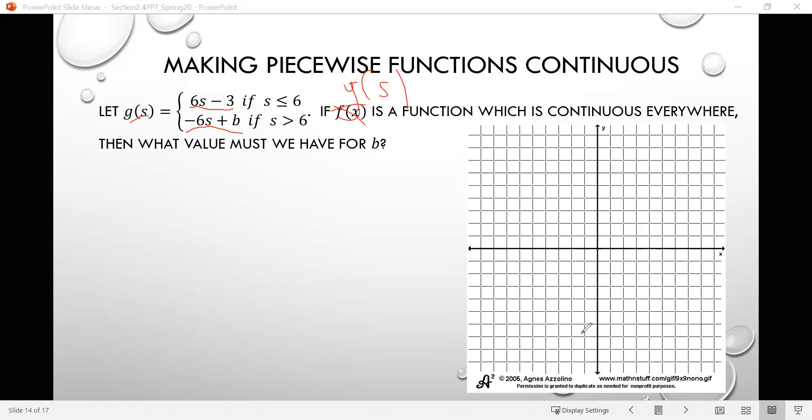It's a function which is continuous everywhere, then what value must we have for b? So our goal here is to figure out what is the value of b so this function is continuous. Now notice that b does not appear in the top part of the function here, the 6s minus 3, for values of s that are less than or equal to 6.